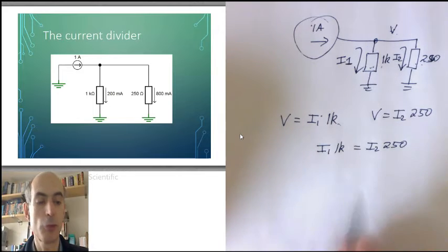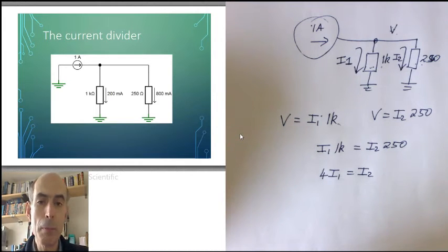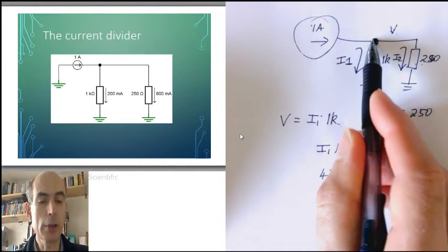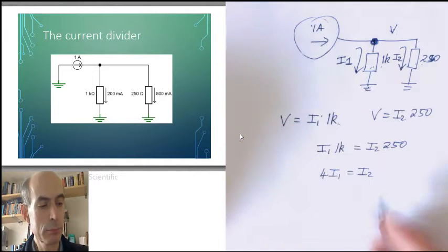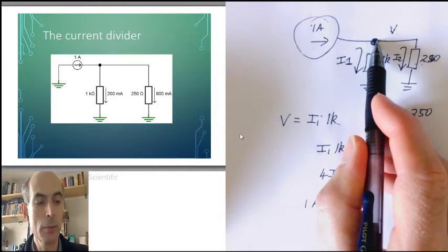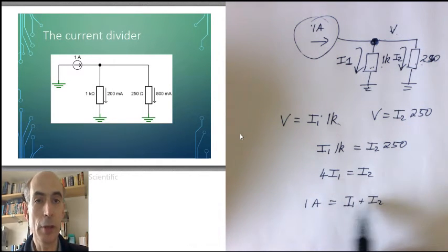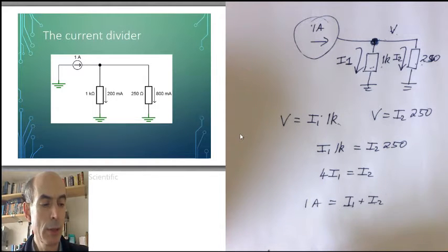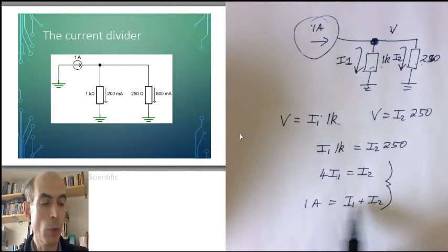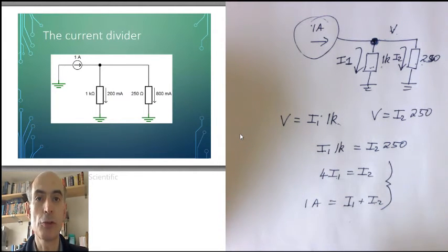Divide both sides by 250, and you get 4 times I1 equals I2. Now, applying Kirchhoff's current law to this node in the circuit here, the total current flowing into this node is 1 amp. The total currents flowing out of this node are I1 plus I2. So I1 plus I2 must equal 1 amp. So we have two simultaneous equations here. 4I1 equals I2, and I1 plus I2 equals 1 amp.